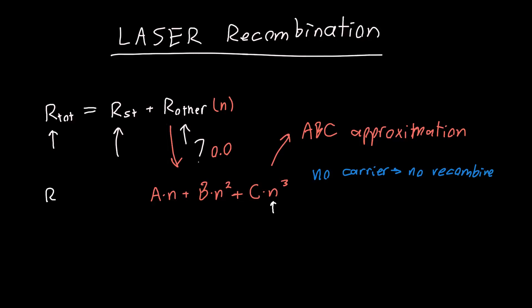So we can rewrite our total recombination now as our stimulated emission plus this ABC approximated term and it'll turn out that this term is actually due to Shockley-Reed Hall recombination. This term is due to spontaneous emission.